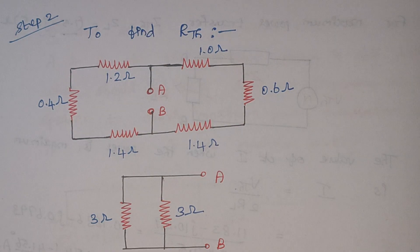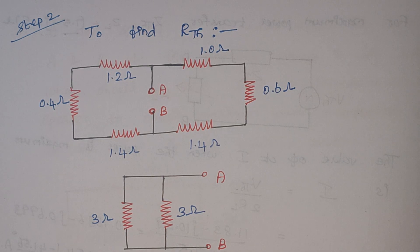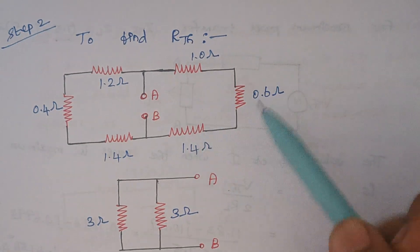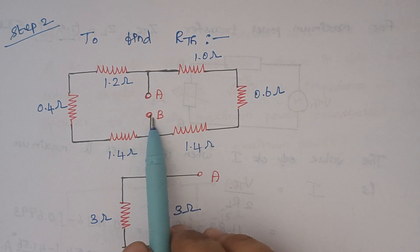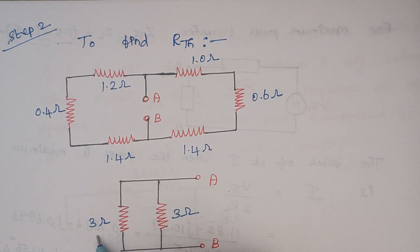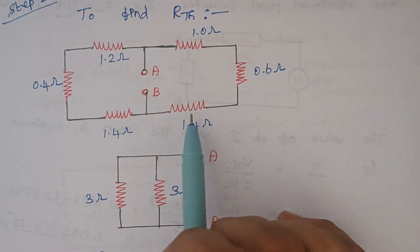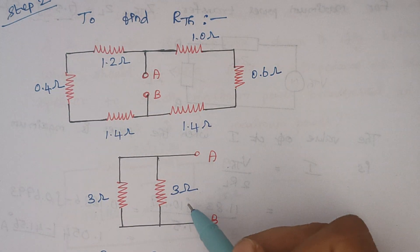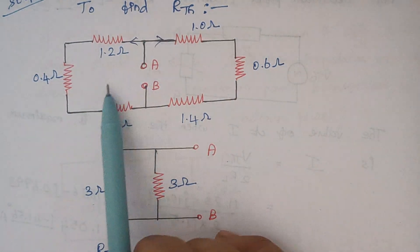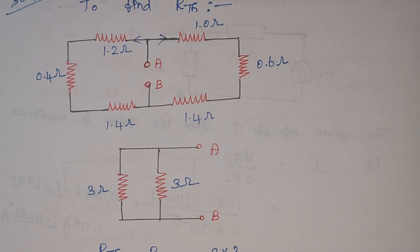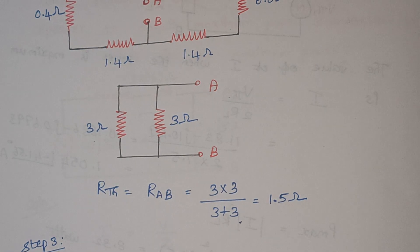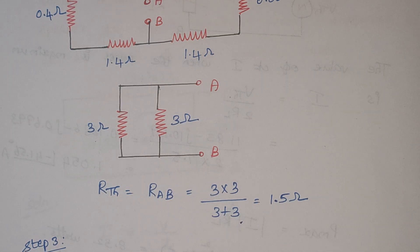Now the next thing is to find R_Thevenin. To find R_Thevenin, we have to remove the voltage sources as well as the load resistance. Once everything is removed, our circuit looks like this. We should not disturb this terminal AB. You see these three resistors are connected in series — when you add, that gives 3 ohms. Again, when you look at these three resistors, again these three are connected in series, so that gives 3 ohms. But when you look at this combination, current gets divided between those two. Therefore this part and this part come in parallel. So the answer will be 3 into 3 divided by 3 plus 3, which gives 1.5 ohms.